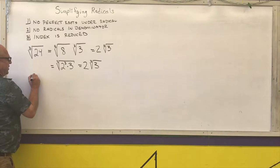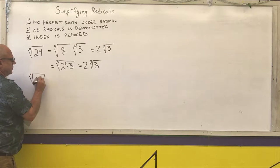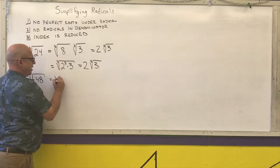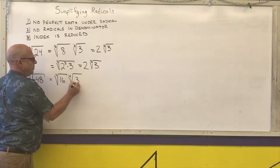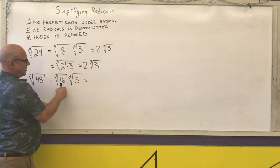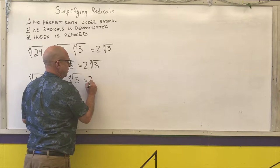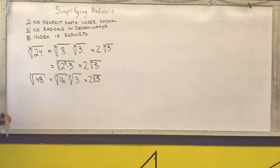The next example is the fourth root of 48. The fourth root of 48 is the same thing as the fourth root of 16 times the fourth root of 3, since 16 times 3 is 48. The fourth root of 16 is 2, because 2 times 2 times 2 times 2 is 16. So the answer is 2 times the fourth root of 3.